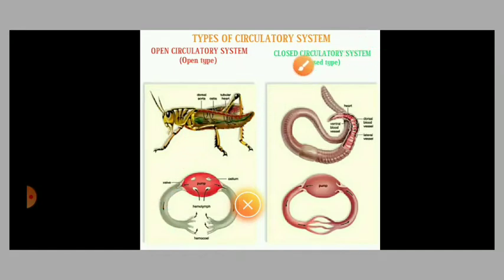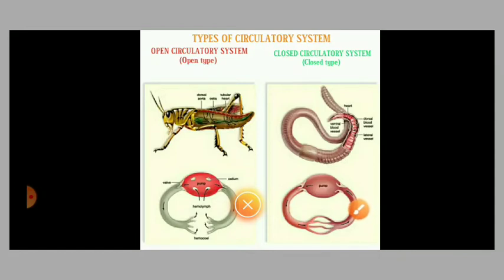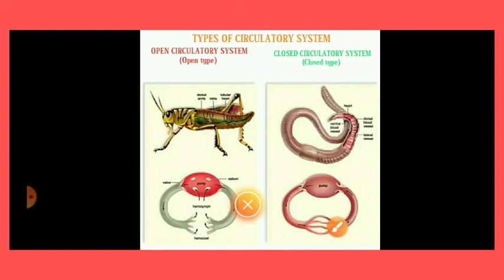Closed circulatory system means all the systems are in closed type. In closed type, the blood flows in a complete circuit around the body through specific blood vessels called arteries and veins. The blood flows from arteries to veins through small blood vessels called capillaries.